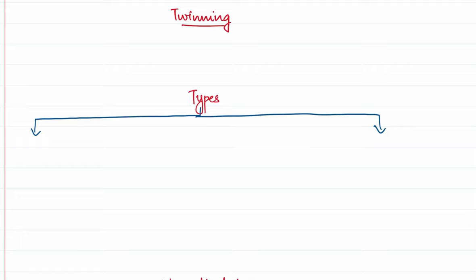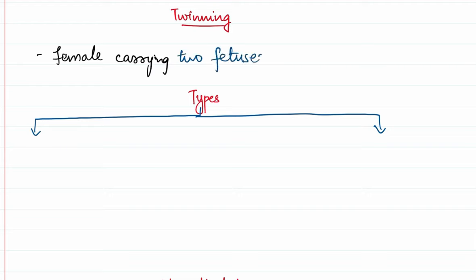Hello everyone. In this video we will be discussing about twins. We all know what a twin is by definition. Twinning refers to a female carrying two fetuses in a single gestation, and this is called twinning.